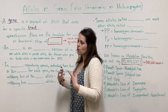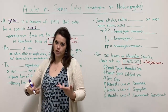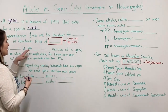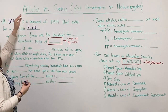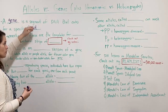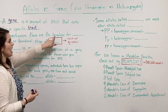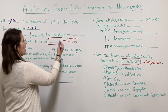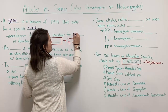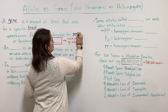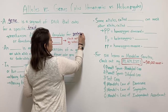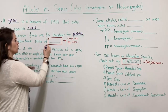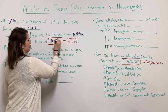Now how does a gene code for a specific trait? What is the mechanism? Well, the genes are the templates for either proteins or functional strips of RNA.